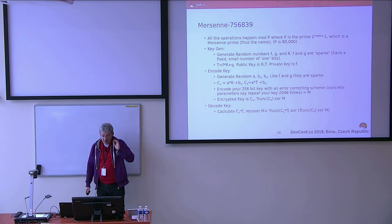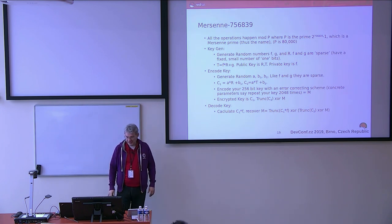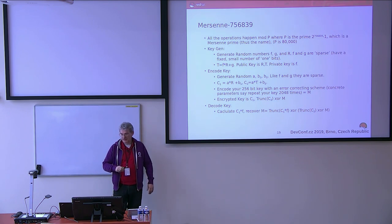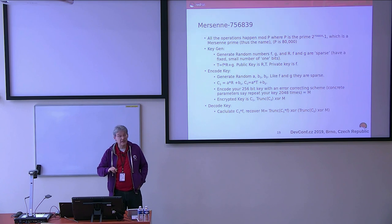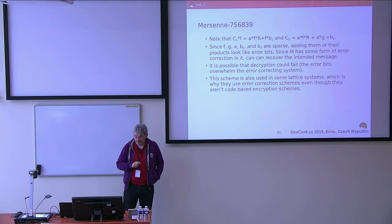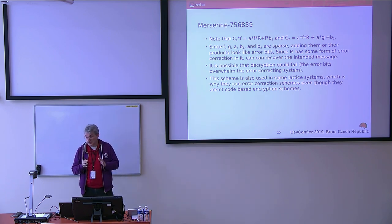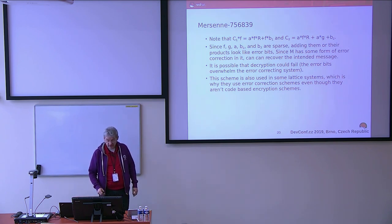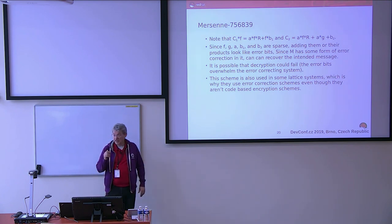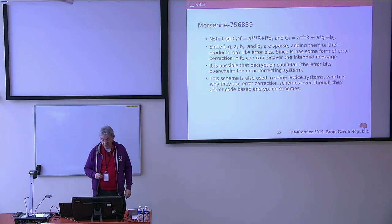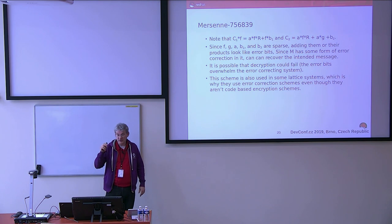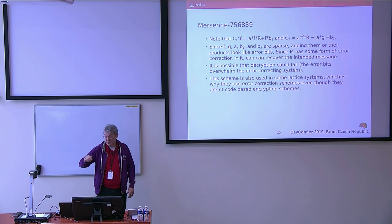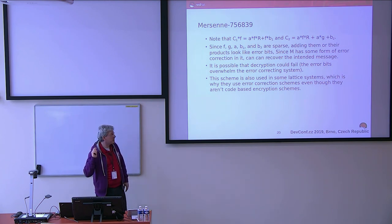I'm going to turn Mersenne into a homework problem for you. Mersenne is one of those systems not based on our traditional post-quantum systems, and it actually looks pretty secure. What's interesting is it's simple enough that you can read the paper without a lot of math and understand how it works. The scheme it uses is related to the scheme some of the smaller lattice systems use, so you can get an idea of how that scheme works without diving into all the details of lattice. Underneath the covers, it uses error correction systems and can have a decryption error if errors get too high — same as lattice. Error correcting systems are becoming a new cryptographic primitive.